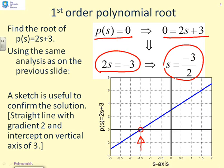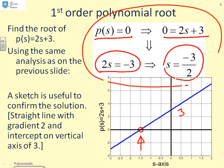And the intercept with the vertical axis is 3, as you would expect. So what we've done is we've confirmed using a sketch that this function does indeed cross the horizontal axis at minus 1.5. And using our analysis technique, which is in this top box, we found that the root is minus 1.5. So two different methods have given us the same solution for the root.